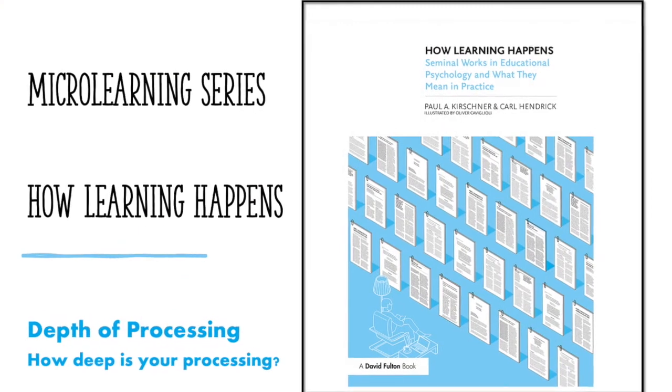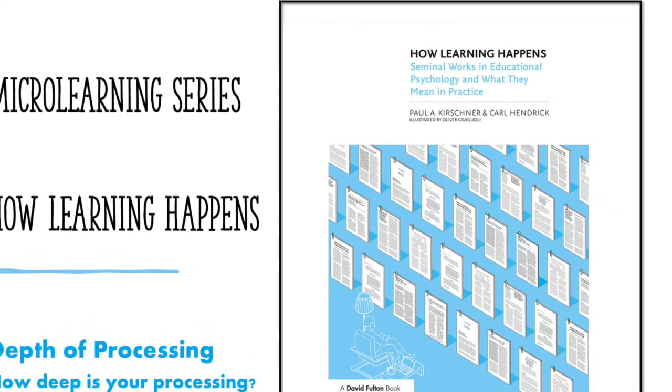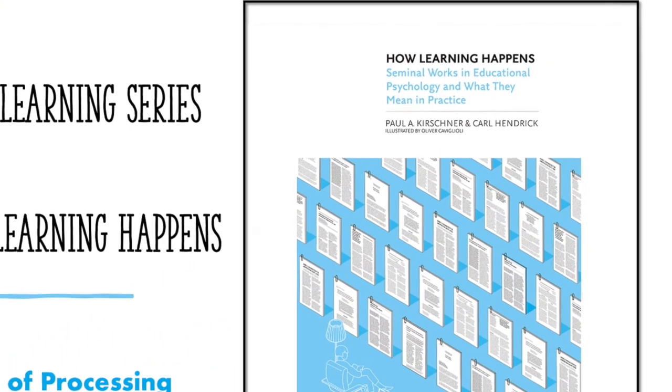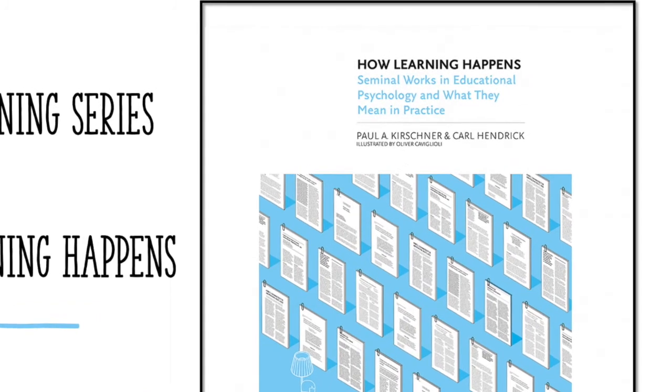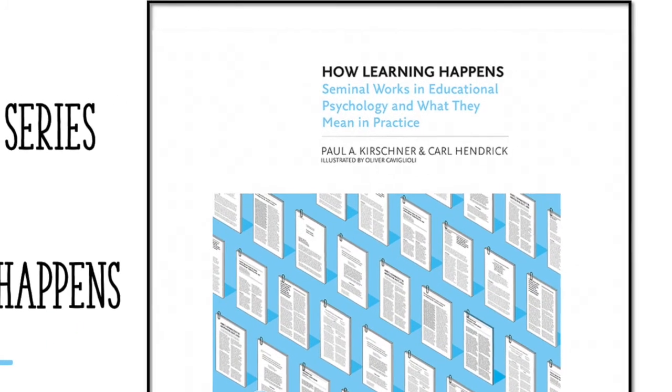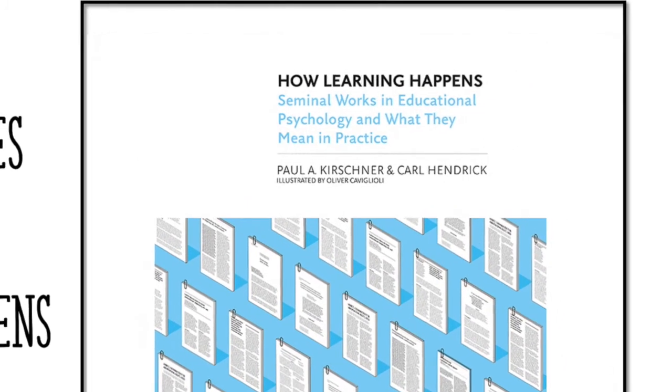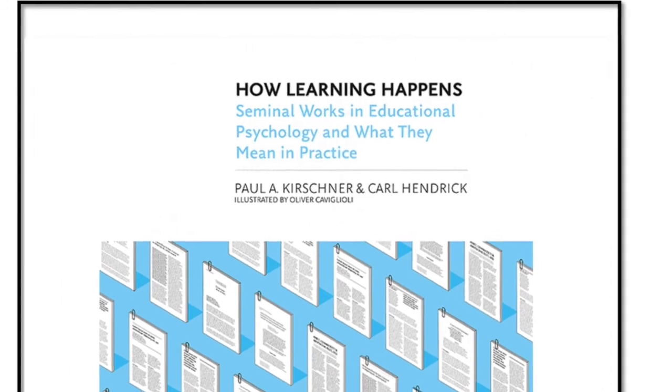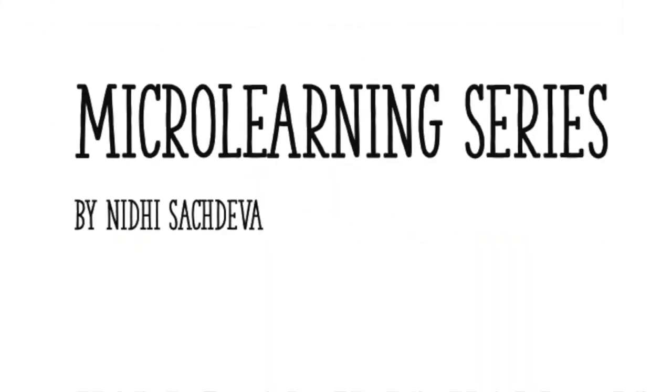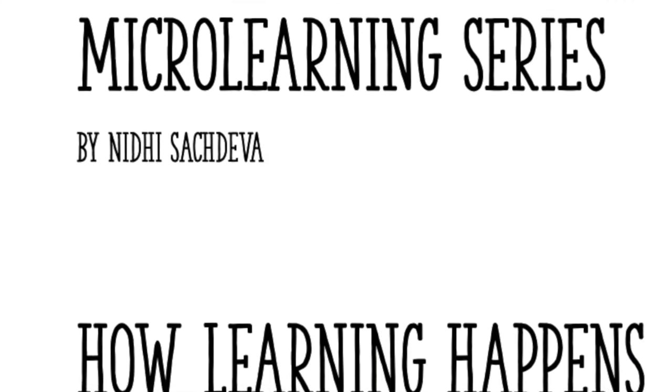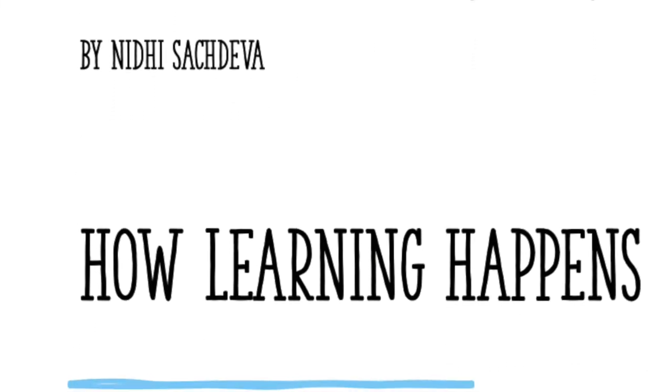Welcome back to this microlearning series called How Learning Happens, based on the book called How Learning Happens, Seminal Works in Educational Psychology and What They Mean in Practice by Paul A. Kirshner and Carl Hendrick, published 2020 by Routledge. My name is Nidhi Sajteva and I am the creator and narrator of this microlearning series.